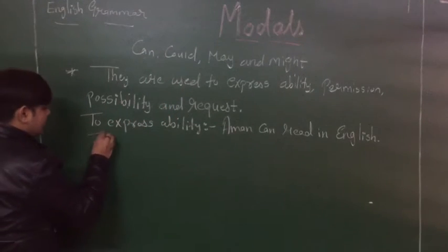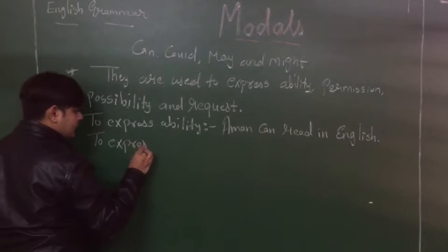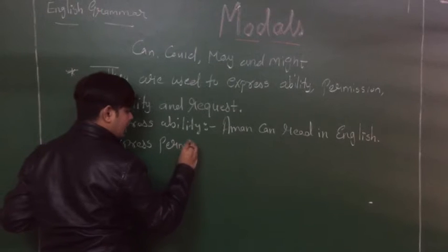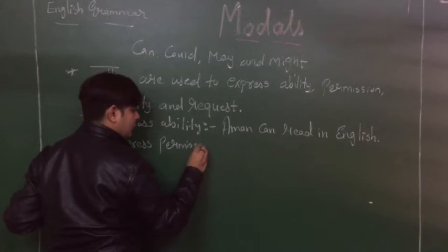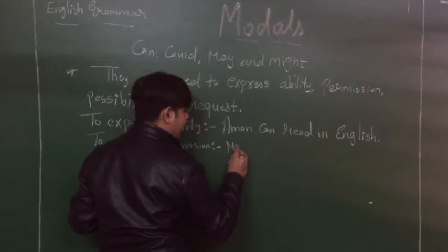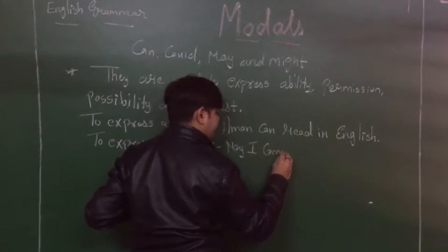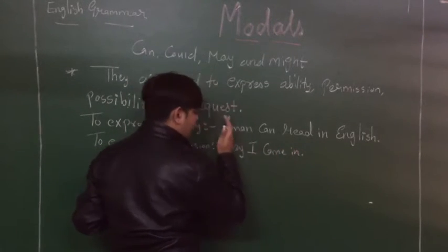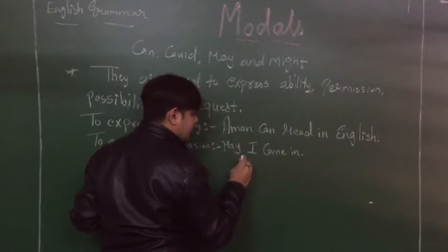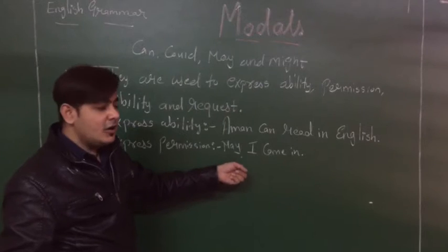Next, we have permission. To express permission, we can say: 'May I come in?' This is how we ask for permission using the modal 'may.' So 'May I come in?' is our example for expressing permission.